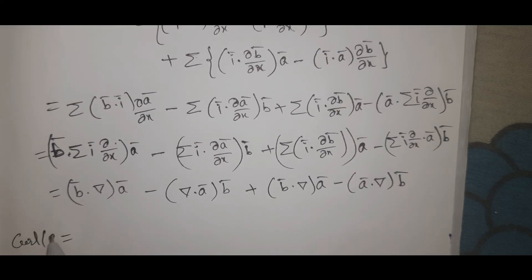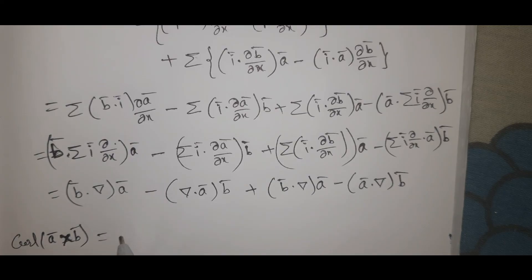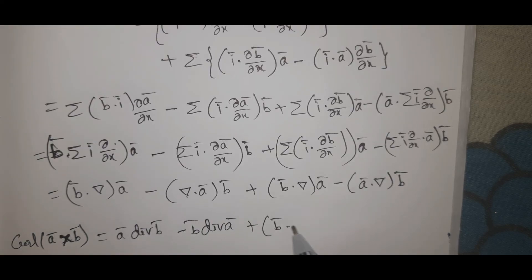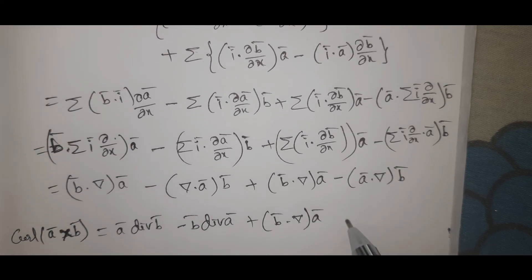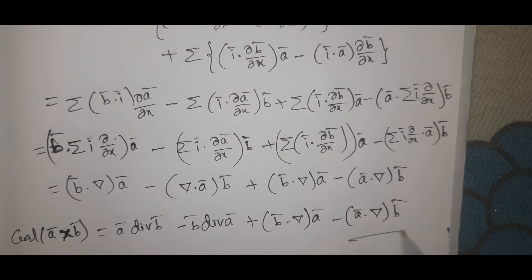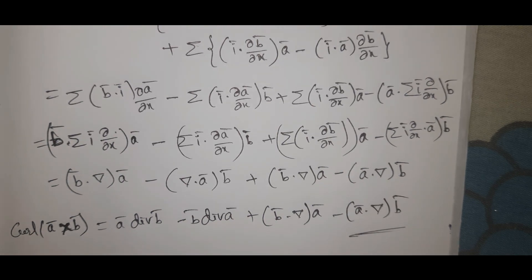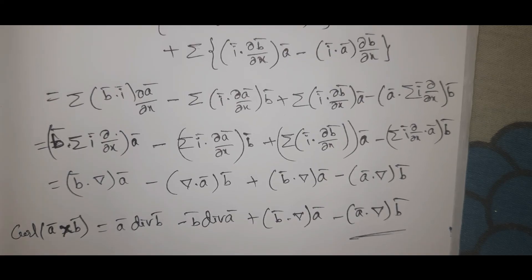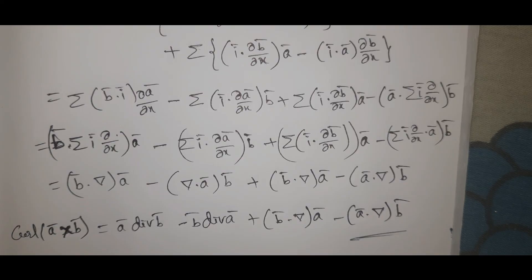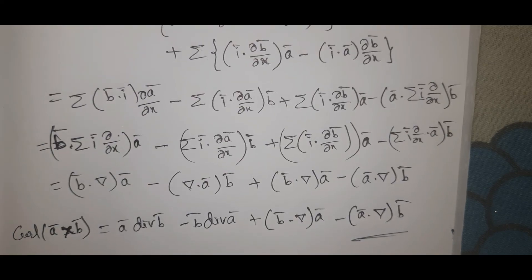Now we have shown: curl(ā × b̄) equals ā divergence b̄ minus b̄ divergence ā plus b̄ dot ∇ā minus ā dot ∇b̄. This is the result. Please subscribe to our channel, don't forget to like and share. Thank you.